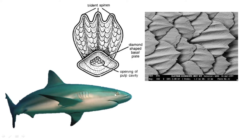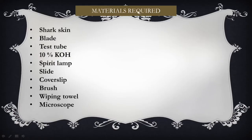Now let's go and extract the scales from the skin of the shark and observe them under the microscope. First, let's understand the materials required: a piece of shark skin, a blade, a test tube, 10% KOH solution, a spirit lamp, a slide, a cover slip, a brush, and a wiping towel, and finally a microscope.